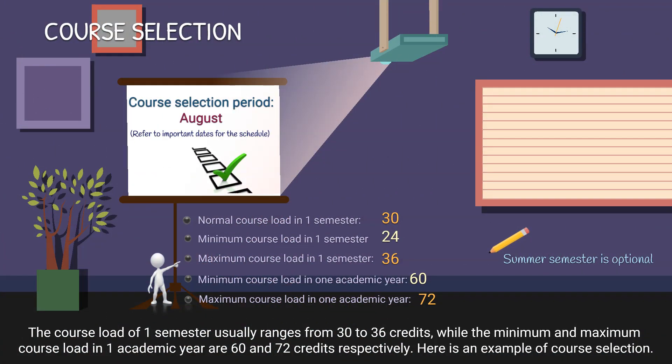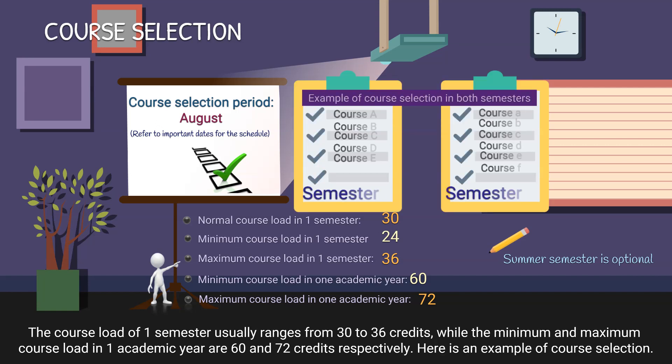The course load of one semester usually ranges from 30 to 36 credits, while the minimum and maximum course load in one academic year are 60 and 72 credits respectively.